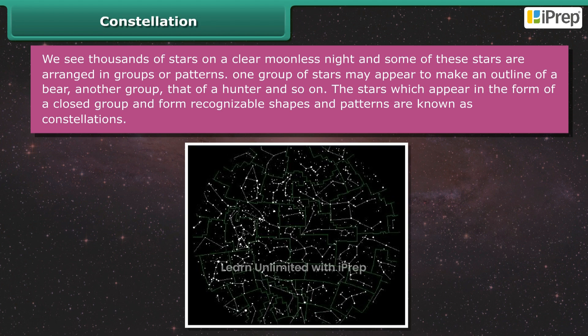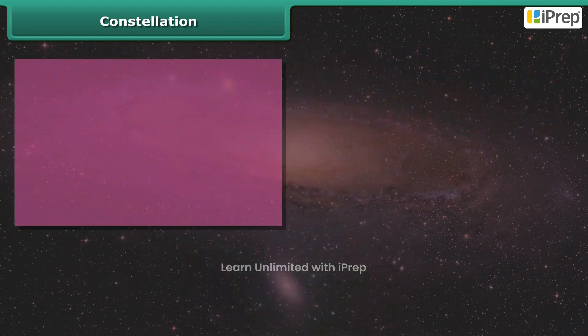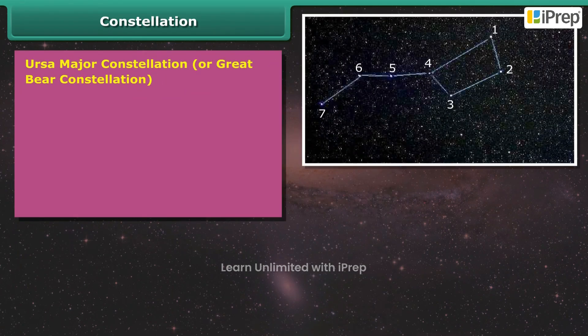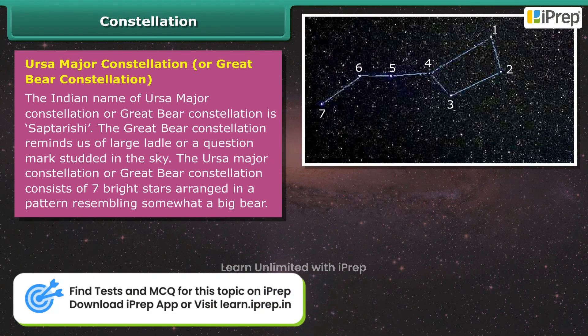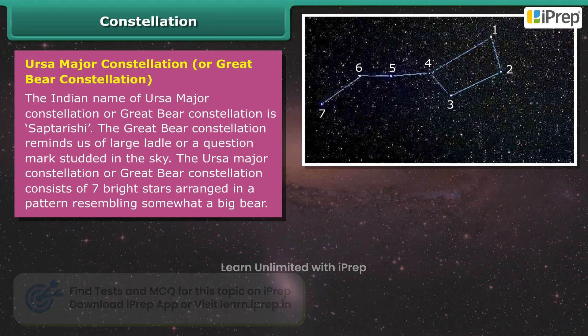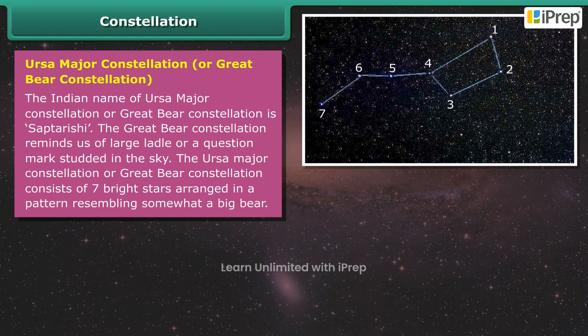Ursa Major constellation, or Great Bear constellation — the Indian name is Saptarishi. The Great Bear constellation reminds us of a large ladle or a question mark studded in the sky. The Ursa Major constellation consists of seven bright stars arranged in a pattern resembling somewhat a big bear.